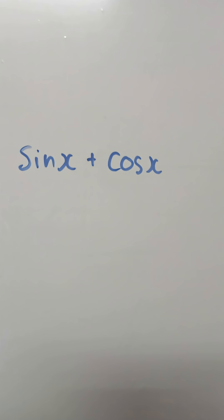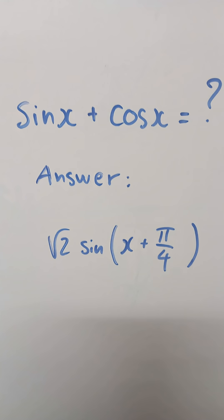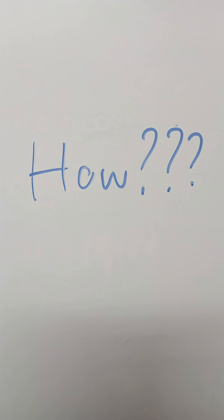What is equal to sine x plus cosine x? The answer is the square root of 2 times sine of x plus pi over 4. But how is that possible?